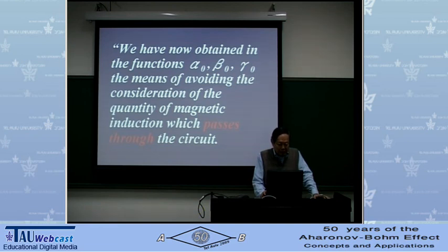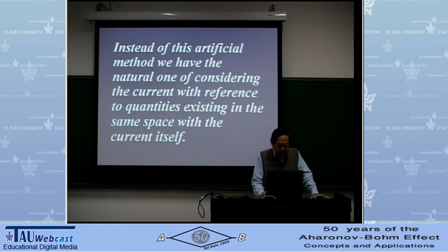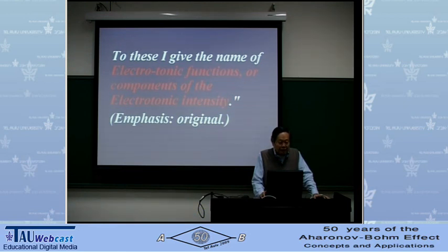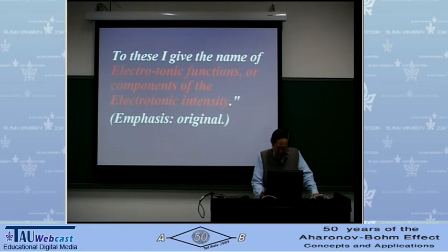Maxwell wrote: 'We have now obtained in the functions alpha-zero, beta-zero, gamma-zero' — that is, the components of the vector potential — 'the means of avoiding the consideration of the quantity of magnetic induction which passes through the circuit. Instead of this artificial method, we have the natural one of considering the current with reference to quantities existing in the same space with the current itself. To these I give the name of the electrotonic functions, or components of the electrotonic intensity.' The emphasis in red was Maxwell's original. This is the only paragraph in which Maxwell was perhaps really referring to the different gauges.